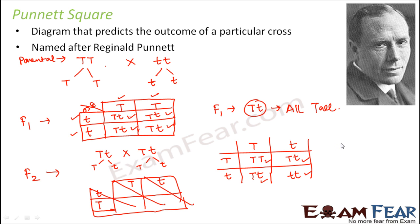So from this what do you get? So if you talk about the F2 output, the F2 output if you see, this is going to be tall, this is also going to be tall, this is going to be tall, and this is going to be dwarf. So just by looking at this table you can find out the phenotypic ratio. So the phenotypic ratio is going to be the ratio of the tall to dwarf. So there are three tall for one dwarf. So three is to one is the phenotypic ratio.